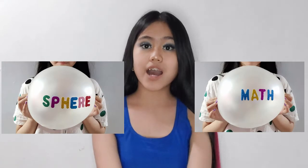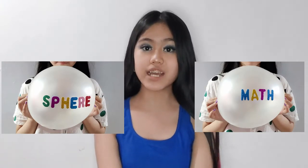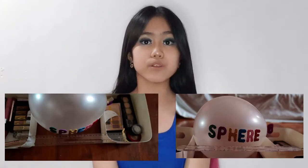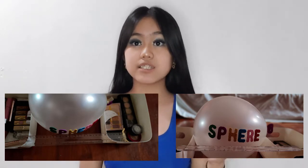For my assigned project, I have to make a figure which is a sphere. So I used a sphere called a birthday balloon, which diameter is yet unknown. To get the diameter of the balloon, I used a ruler and two boxes. I placed the balloon between the two boxes and measured the balloon with a ruler from end to end.